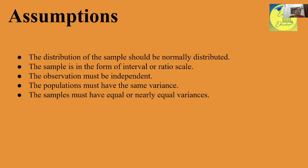The assumption is that the distribution of the sample should be normally distributed. The sample should be in the form of interval and ratio scale — nominal, ordinal, interval, ratio — where interval and ratio are the higher-level scales. Parametric tests are applied to interval and ratio data. Observations must be independent. The population must have the same variance, or the samples must have equal or nearly equal variance — variance being the average of squared deviations.